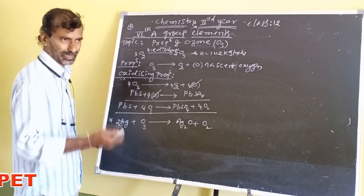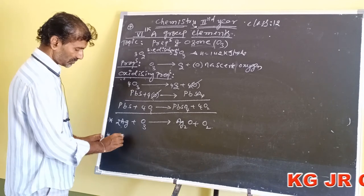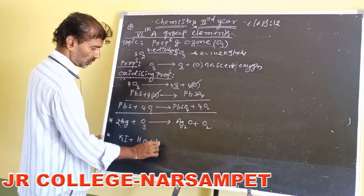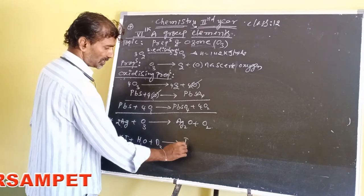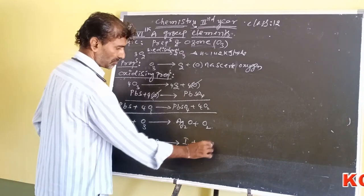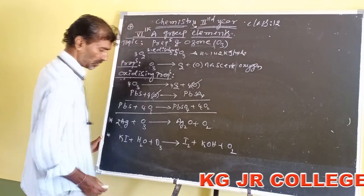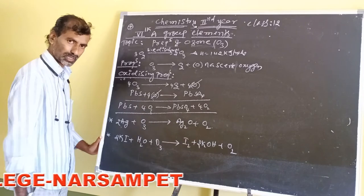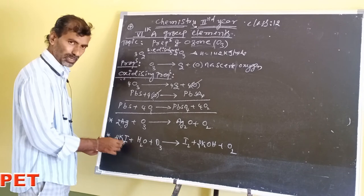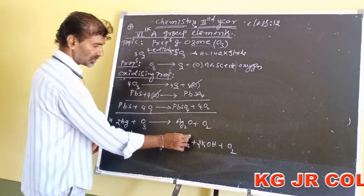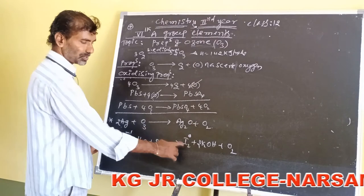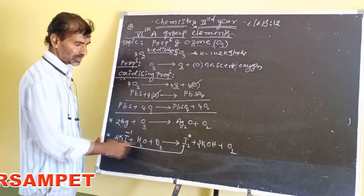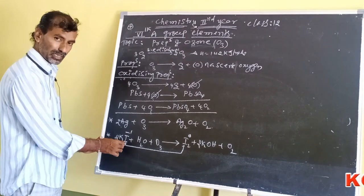Third oxidizing property: moist potassium iodide is oxidized to iodine. Water plus ozone gives iodine plus KOH plus oxygen. Here 2 moles of potassium iodide give 2 moles of potassium hydroxide. The oxidation state of iodine in potassium iodide is minus 1, and in iodine it is 0 — so minus 1 to 0 oxidation occurs.